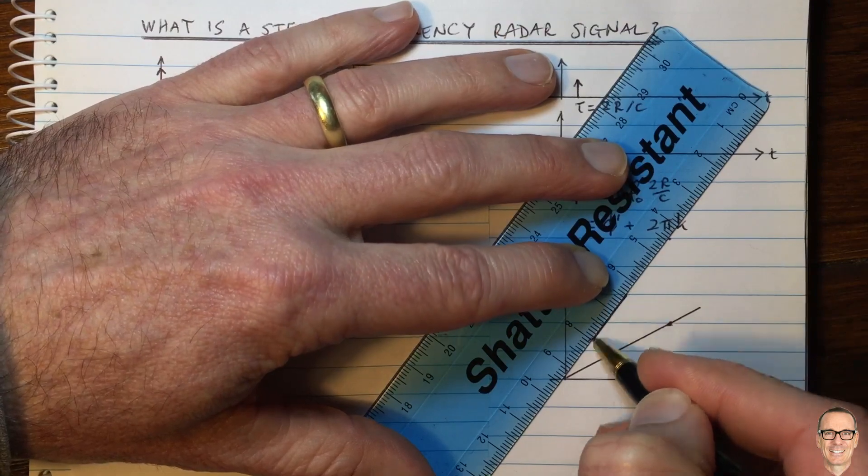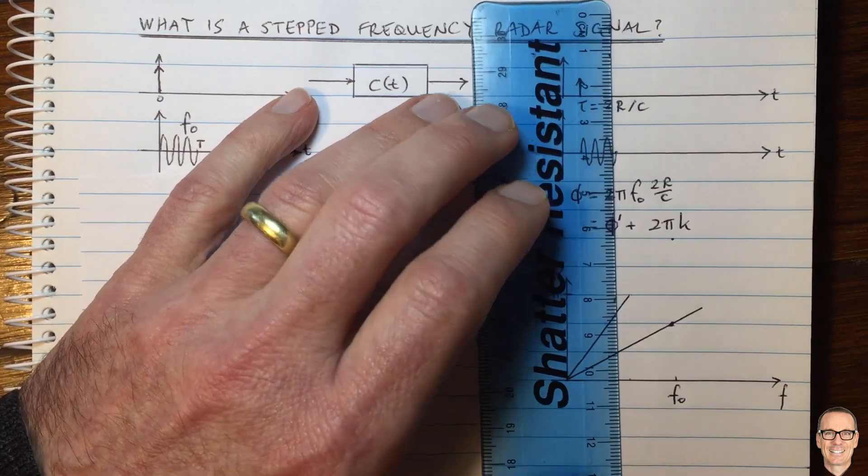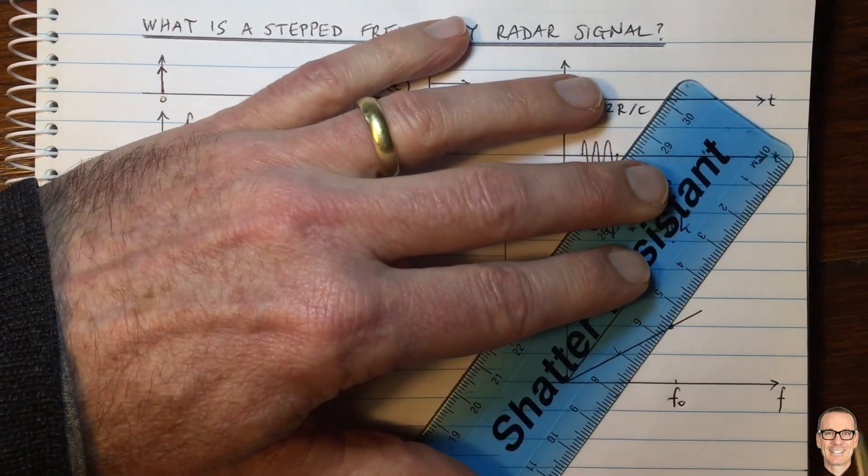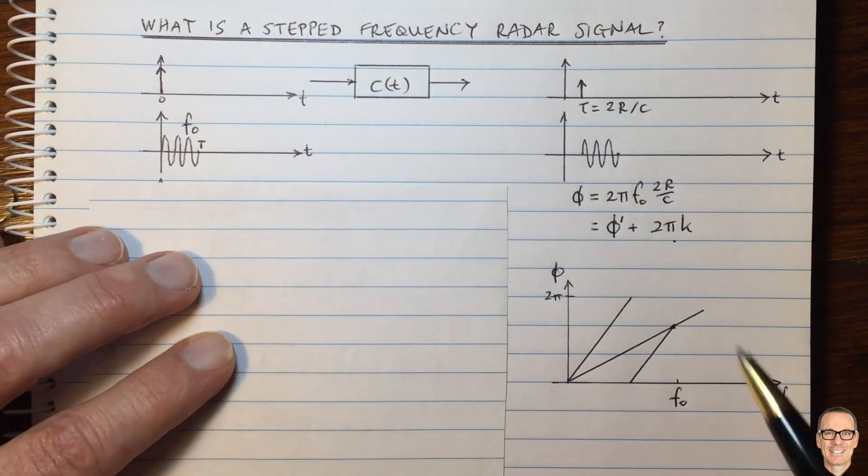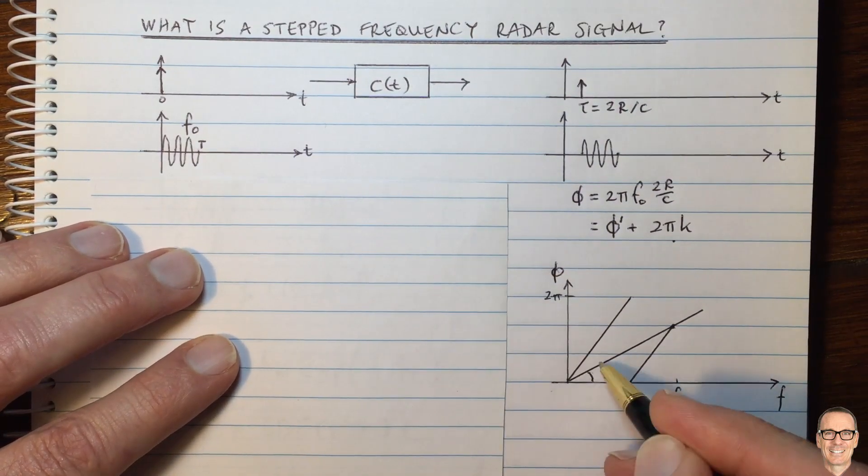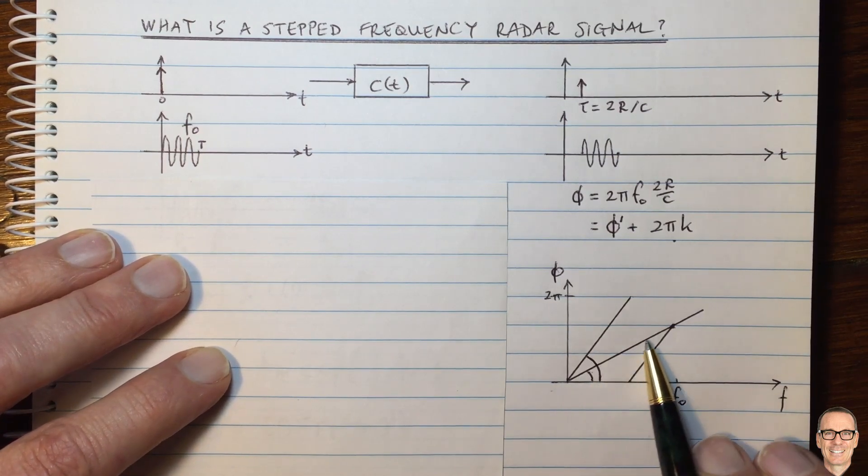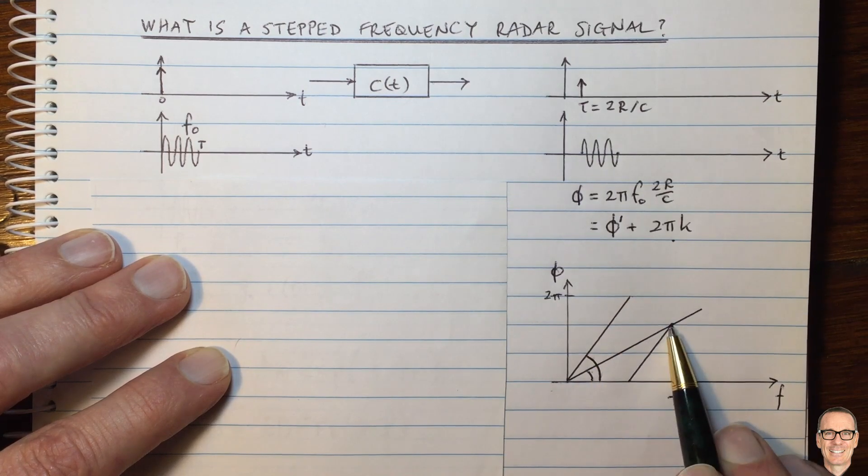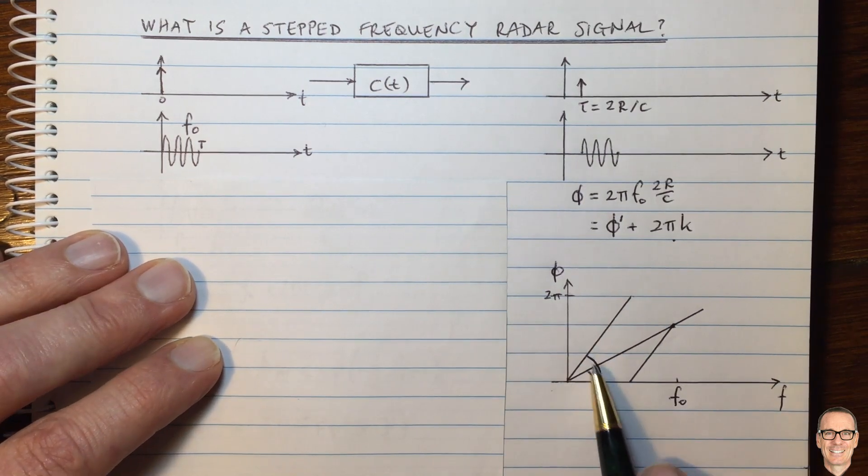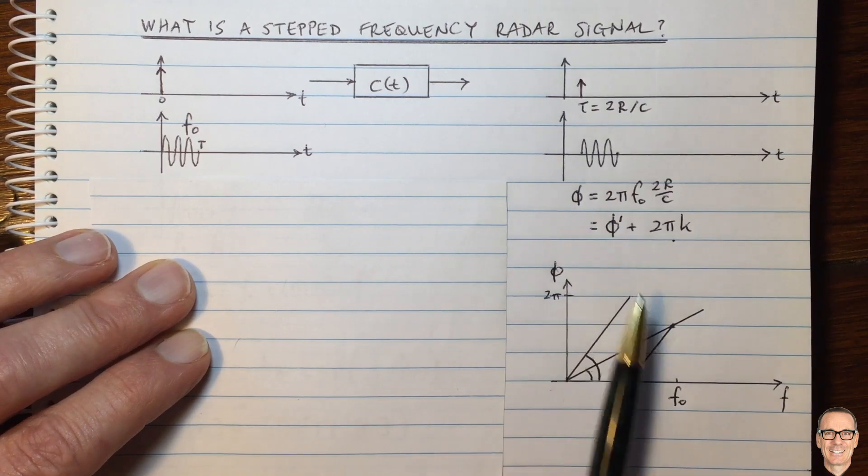Of course, it stops at 2π and wraps back to zero and then carries on at that same angle and gets us to the same point. So you can see the delay is related to this angle, and you can see we can't tell the difference between a delay that gives this linear phase and a delay that gives this linear phase, and of course any other one that also goes through this point with steeper angles.